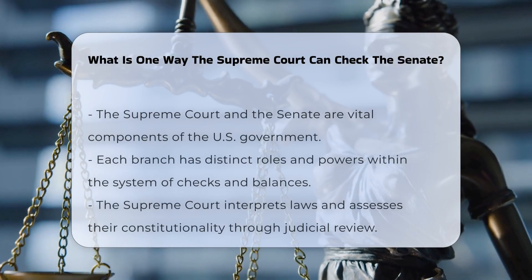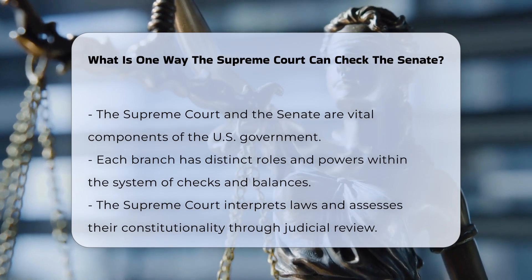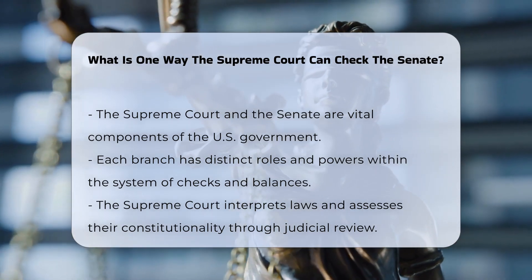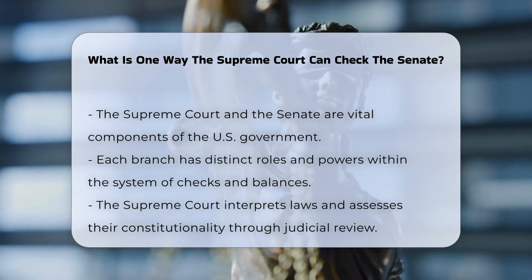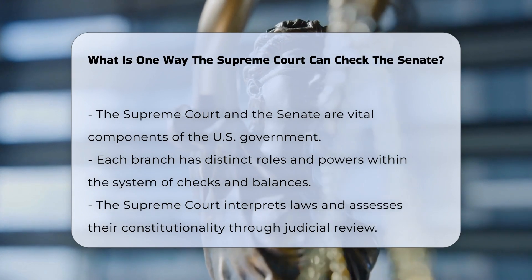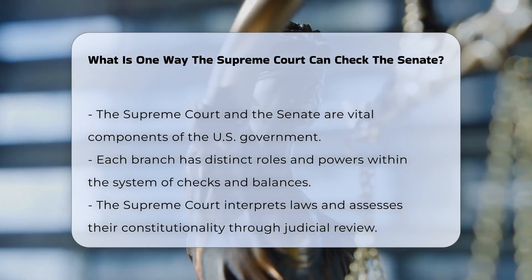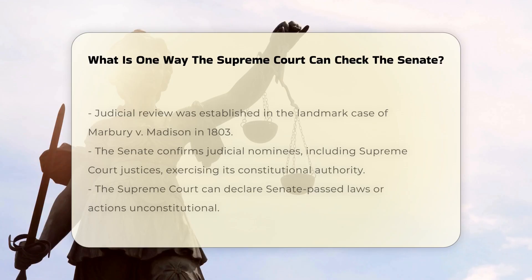The Supreme Court and the Senate are two critical components of the U.S. government, each with distinct roles and powers. The system of checks and balances ensures that no single branch of government becomes too powerful. The Supreme Court has the authority to interpret laws and determine their constitutionality. This power, known as judicial review, was established in the landmark case of Marbury v. Madison in 1803.